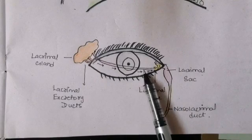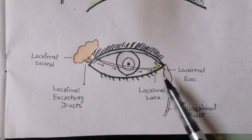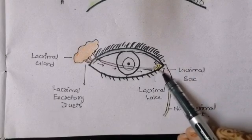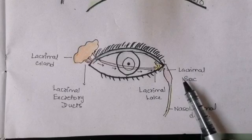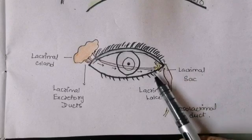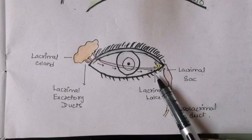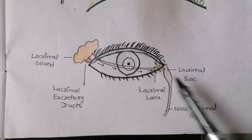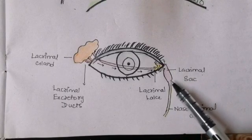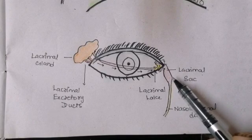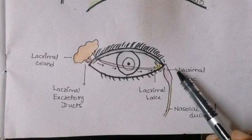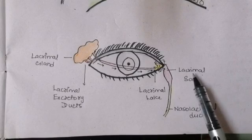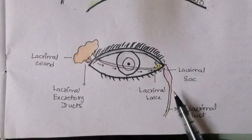From the lacrimal lake, the fluid goes to the lacrimal canaliculae. There are two lacrimal canaliculae — both superior and inferior — that ultimately drain into the lacrimal sac. The lacrimal canaliculae open via the lacrimal puncta, which are small holes on the medial canthus of the eye. The tears then accumulate in the lacrimal sac, present just below the lacrimal lake.